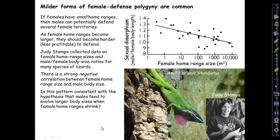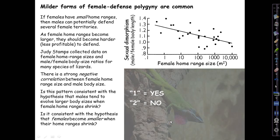There are two potential variations on the explanation for this that haven't been definitively distinguished. The pattern is consistent with the hypothesis that males tend to evolve larger body size when female home ranges shrink. But it's also consistent with the hypothesis that females tend to become smaller when their home ranges shrink, perhaps because they're making do with smaller amounts of food. This could be distinguished with the kind of phylogenetic analysis we talked about last time for relative testis size in bats, but as far as I'm aware it hasn't been done yet for these species.